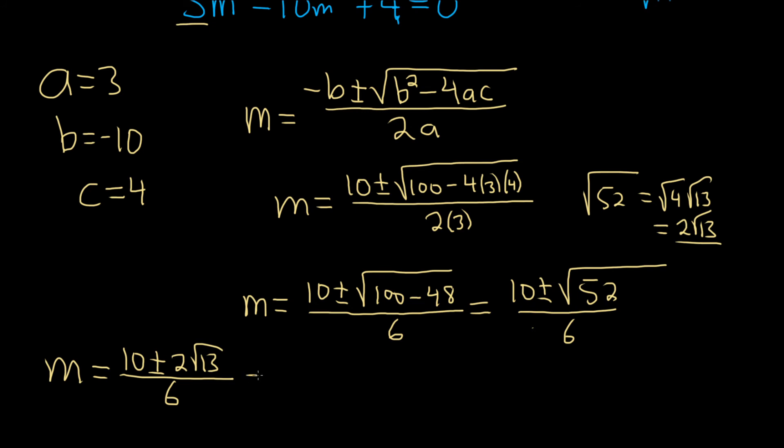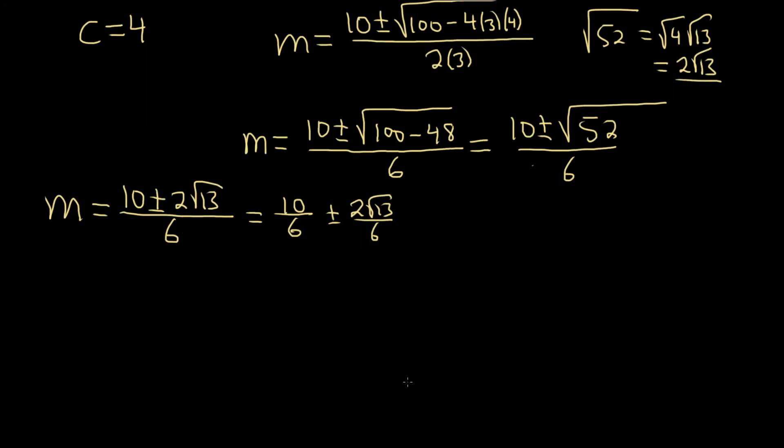Now we can break it up. So it's 10 over 6, plus or minus 2 square root of 13 over 6. Crazy looking answers. So m is equal to 5 over 3, plus or minus 2 goes into 6, 3 times, so you'll get the square root of 13 over 3. So we have two separate answers.